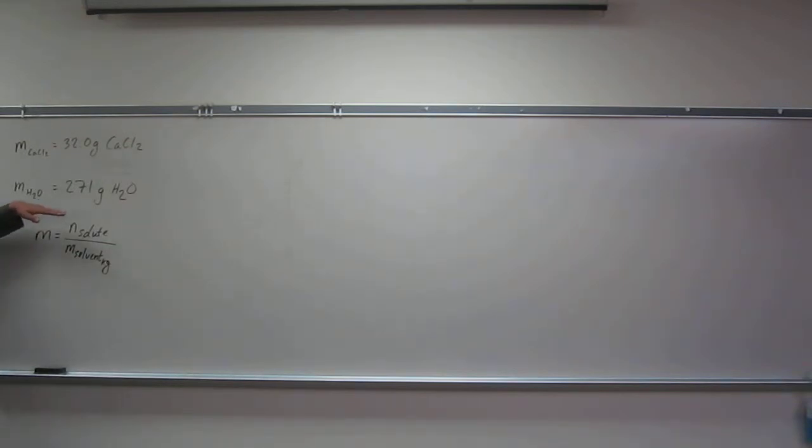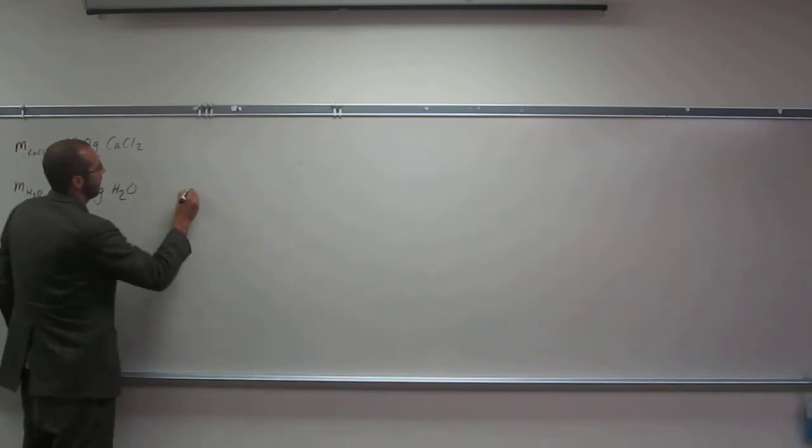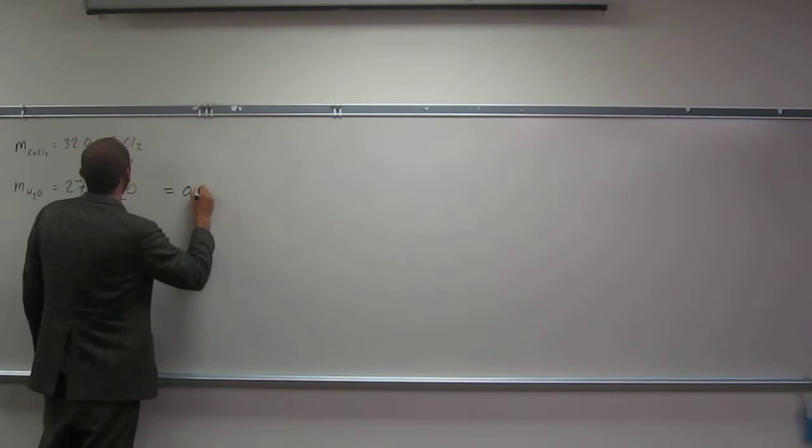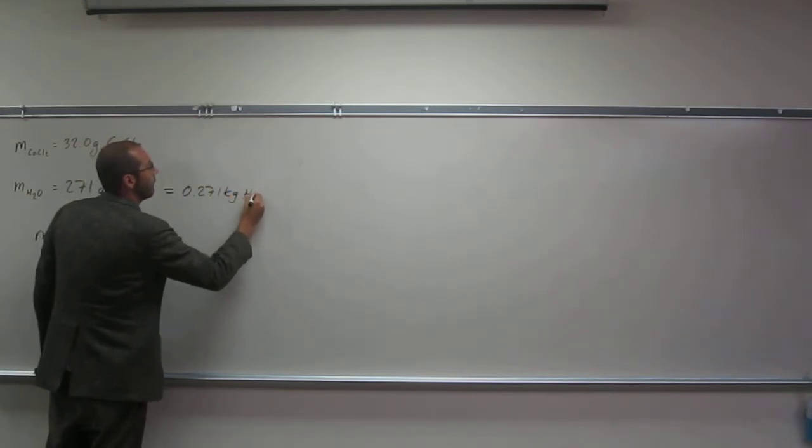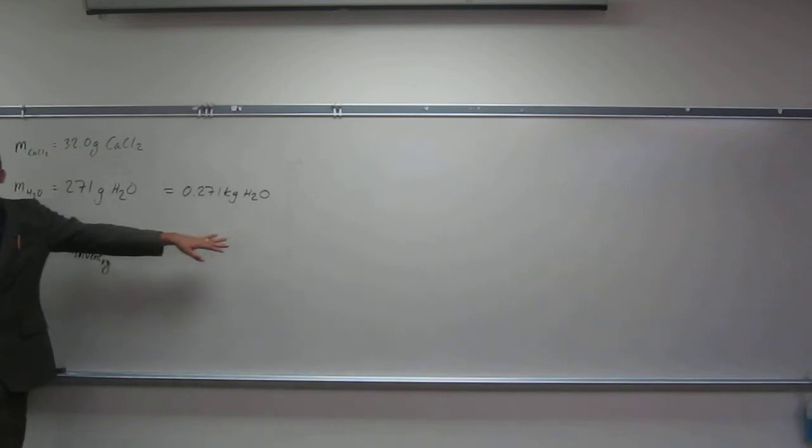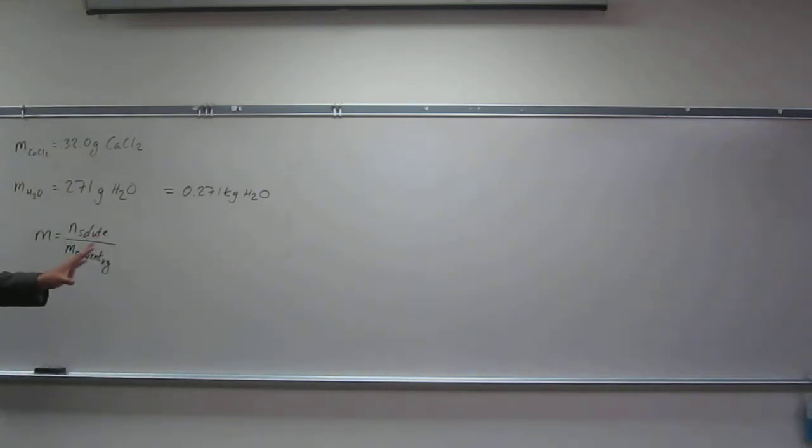Which one of these is the solvent? The water, right? Is that in kilograms? No, so we're going to have to convert that to kilograms. Do you guys remember how to do that? Grams over, or kilograms over grams. So if we did that, it would be 0.271 kilograms of water. Is everybody okay with that? Do I need to write it all out?